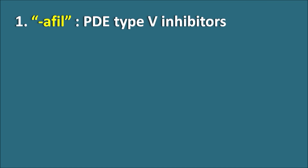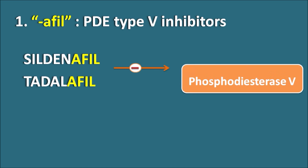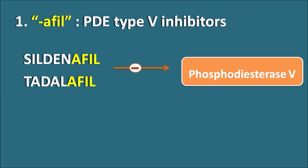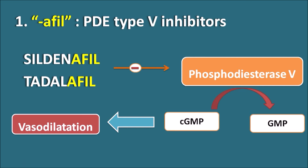First, the suffix '-afil' indicates phosphodiesterase type 5 inhibitors. Drugs like Sildenafil and Tadalafil belong to this category — you can observe the suffix is A-F-I-L. These drugs inhibit the phosphodiesterase type 5 enzyme, which converts cyclic GMP into GMP. Because of inhibition of this metabolism, cyclic GMP levels increase, leading to vasodilation. In this way, phosphodiesterase type 5 inhibitors are used as vasodilators, and particularly they are used in the treatment of erectile dysfunction.